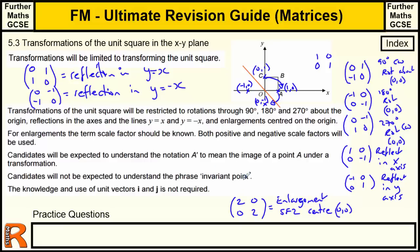Invariant points are just points that don't move, but we don't need to know that, so that's not important. And we don't need to know about I and J vectors, which is more of an A level topic.